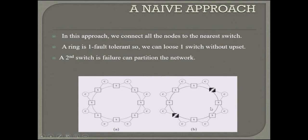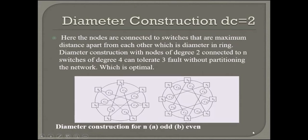If dc equals two, in this particular figure, this is for odd numbers of dc, this is diameter construction, and this is for even numbers of diameter construction. Here the nodes are connected to switches that are maximum distance apart from each other, which is the diameter of the ring.